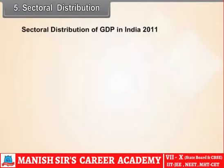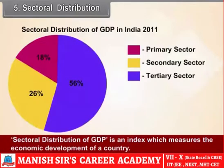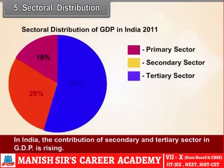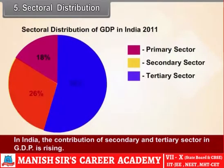Sectoral distribution of GDP in India, 2011. Sectoral distribution of GDP is an index which measures the economic development of a country. In India, the contribution of the secondary and tertiary sector in GDP is rising, indicating an increase in India's economic development.